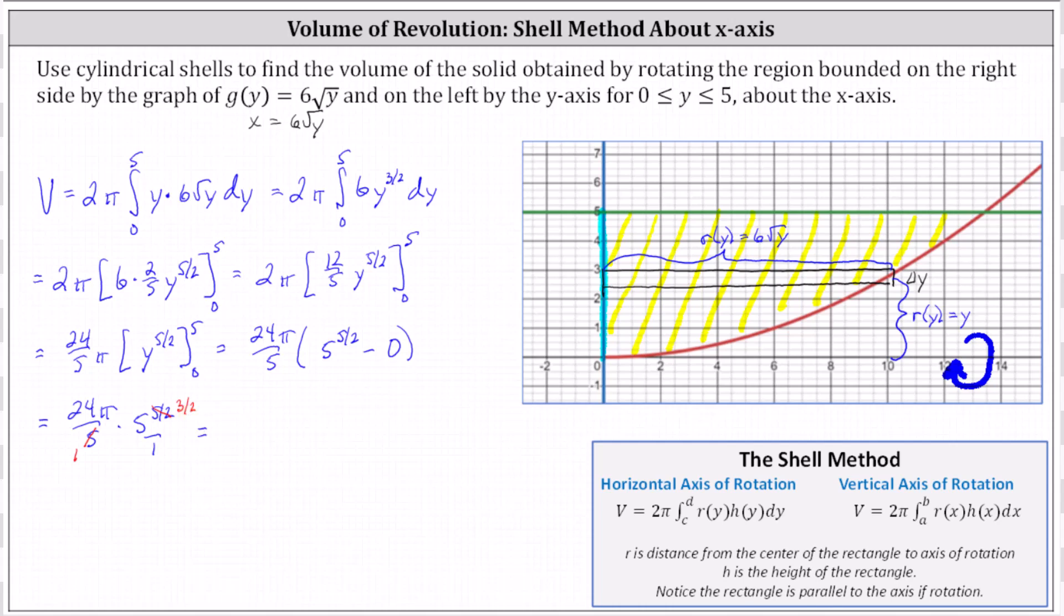This indicates one way to write the exact volume would be 24 times 5 to the power of 3/2 times π, which is an acceptable way to express the volume. But 5 to the 3/2 can be written as 5√5, giving us 24 times 5√5 times π, which equals 120√5π cubic units.